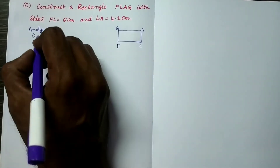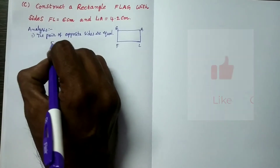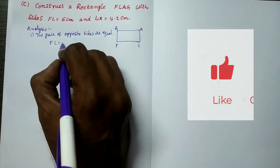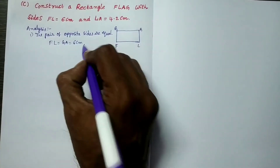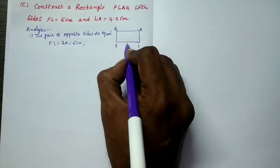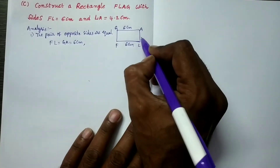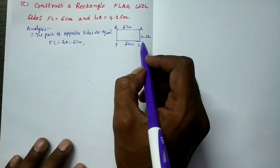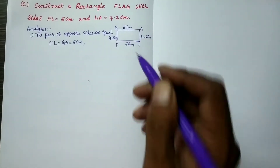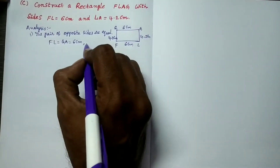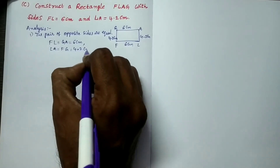The first property: pair of opposite sides are equal. So FL equals its opposite side GA, which is 6 centimeters. Both will be the same, that is 6 centimeters. And LA equals 4.2 centimeters, so the opposite side of LA is FG, which will also be 4.2 centimeters. So LA equals FG equals 4.2 centimeters.